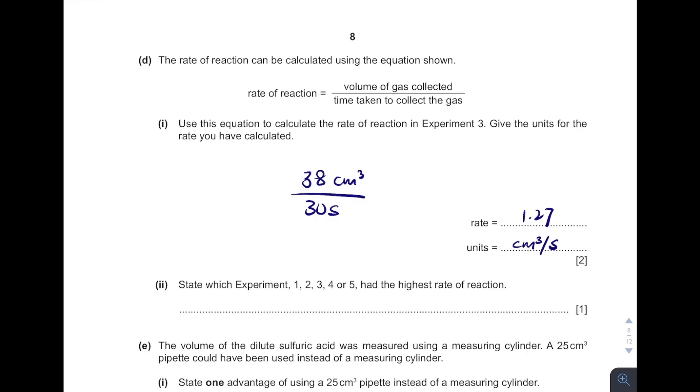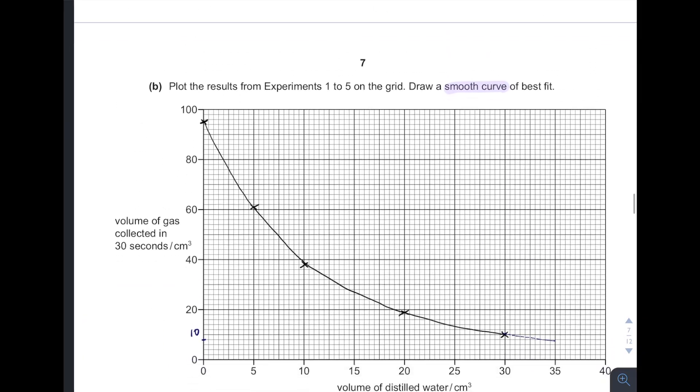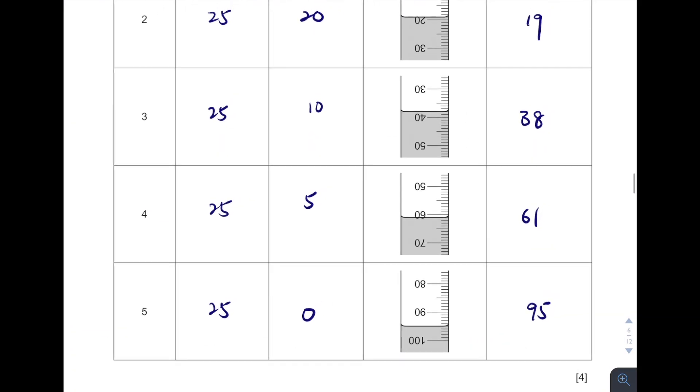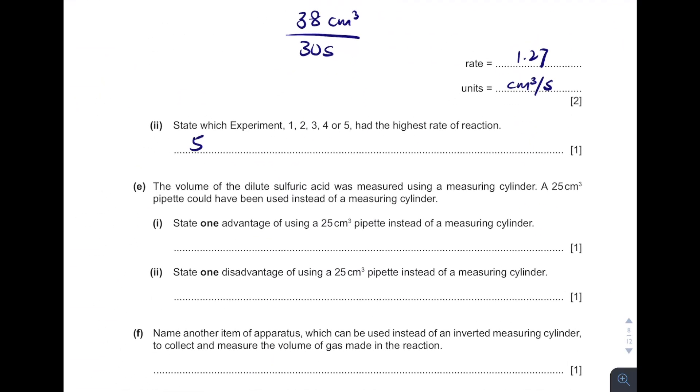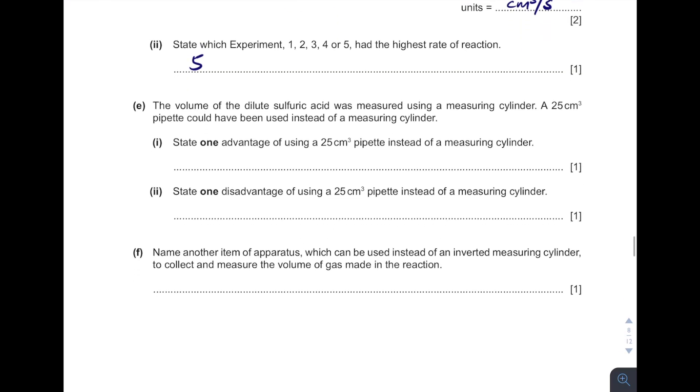And then which one had the highest rate of reaction? From here we know that it has to be 5, isn't it? Because it produced the highest volumes of gas. So what is the advantage of using pipette instead of measuring cylinder? Remember, pipette is always more accurate. And then what is the disadvantage? Yeah, pipette is slower. It takes time to use. It takes more time. Slower.